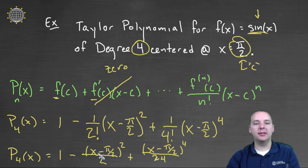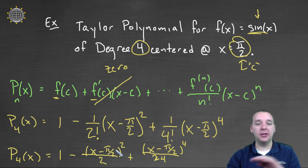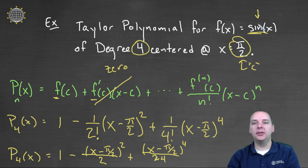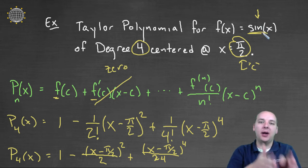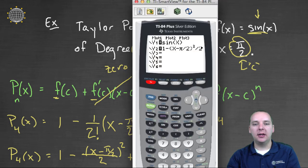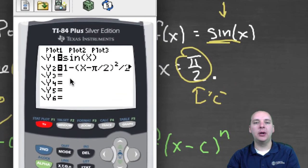The amazing thing about this guy, if you graph this polynomial, which has nothing trig about it, there are no sines, there are no cosines, this guy will follow the sine curve. It's pretty amazing that we can find a polynomial that follows trig functions. To illustrate this, I'm going to actually graph both of these in the calculator.